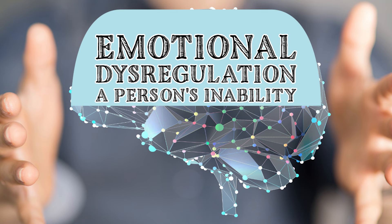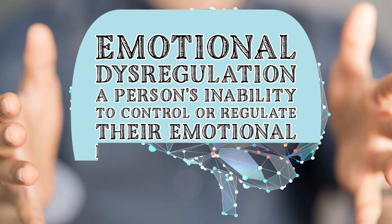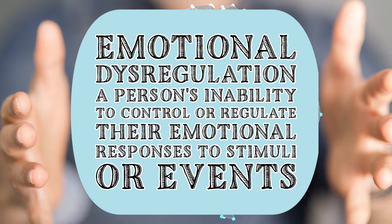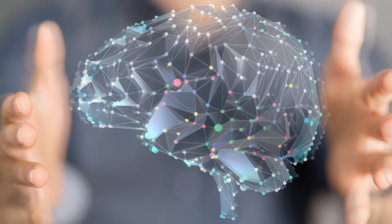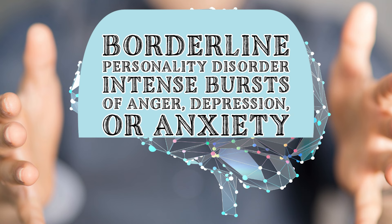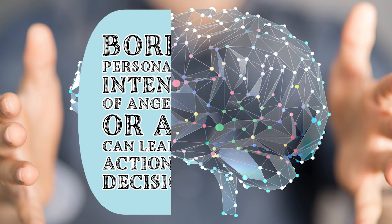Schizophrenia, on the other hand, might influence criminal behavior through symptoms like delusions or hallucinations, which could lead to misunderstandings or fear-driven actions that result in criminal incidents. Emotional dysregulation can also play a significant role — it refers to a person's inability to control or regulate their emotional responses to stimuli or events. This is often a symptom of conditions such as borderline personality disorder, where individuals may experience intense bursts of anger, depression, or anxiety, leading to impulsive actions and poor decision-making that can sometimes result in criminal acts. These psychological factors, combined with environmental influences, can lead to behaviors that violate societal norms and laws.